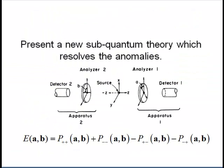In this talk, I will present a new sub-quantum theory which resolves the anomalies which are found in coincident EPR experiments. This is the experiment that Clauser, Horne, Shimony and Holt devised to test Bell's theorem, and to specifically show that quantum predictions are correct.